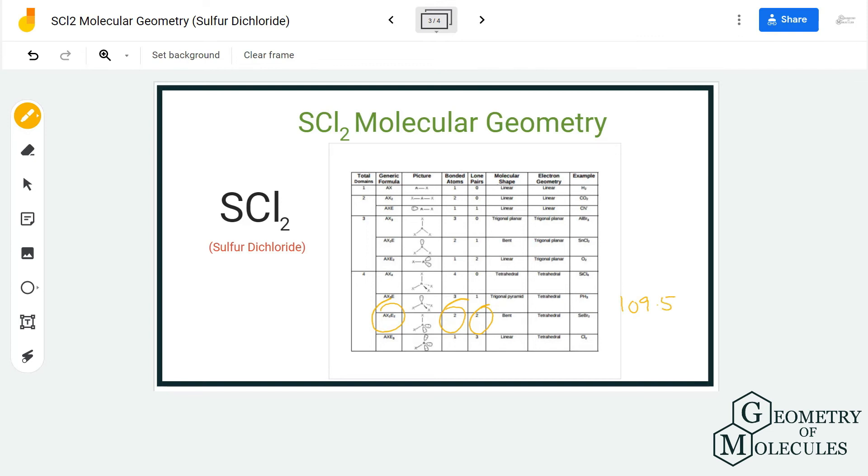This is the overall molecular geometry, shape, and bond angle for SCL2. It is a bent molecule with a tetrahedral electron geometry and approximately 109.5 degrees of bond angles.